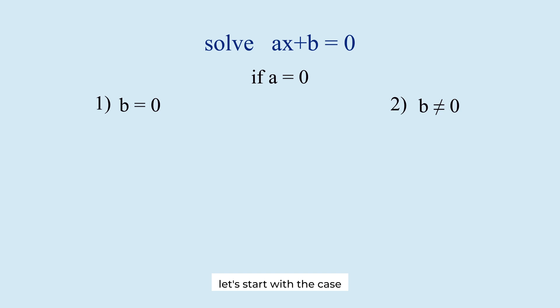Let's start with the case where b is 0. Since a is 0, the left side ax is 0. And since b is also 0, the right side minus b is also 0. Both sides are 0. The equation holds true. No matter what value x takes, the equation is always valid. Therefore, in this case, x can be any value. Every number is a solution.